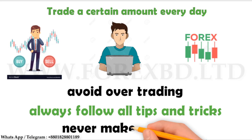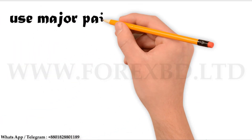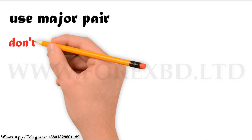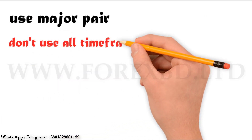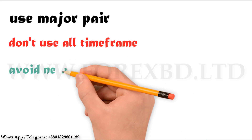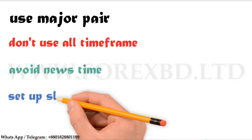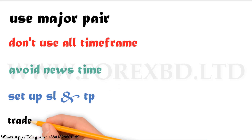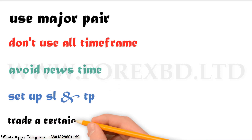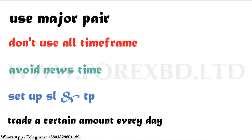Before finishing the video, let's quickly review the five tips: one — trade in major pairs; two — don't trade in all time frames; three — don't trade during news time; four — set up SL and TP in a perfect way; five — trade a certain amount every day and don't over-trade.